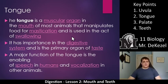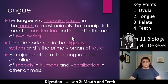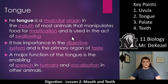The tongue — it should say 'the tongue,' not 'he tongue,' but you get the idea. The tongue is a muscular organ in the mouth of most animals that manipulates food for mastication and is used in the act of swallowing. So mastication is chewing. If you remember, you go back to our last lesson — chewing is a form of physical digestion. So it's a muscular organ in the mouth; a lot of animals have it. And it is used for chewing and swallowing.